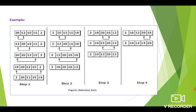20 is selected and we are comparing with 12. Since they are not in order, we are swapping them. The element at first position, now 12, is compared with 10. Again they are not in order, so we are swapping. The first element 10 is compared with the next element 15. They are in order, so no need of swapping. Finally, the first element is compared with the last element 2. They are not in order, so you have to do swapping.